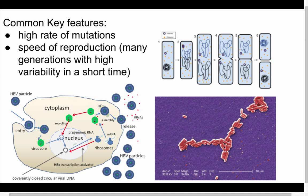Speed of reproduction is another key factor. Bacteria and viruses reproduce super fast, giving us many, many generations within a short period of time — it's not unusual to have a large number of generations within a single day. Each generation increases variation and diversity within the population, allowing these populations to undergo a great deal of change compared to organisms on a human timescale.